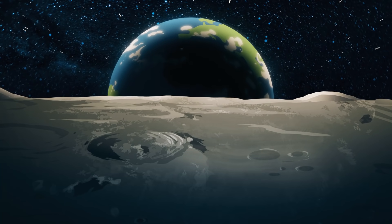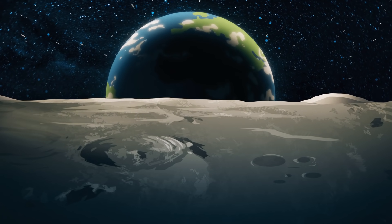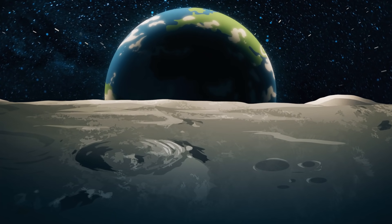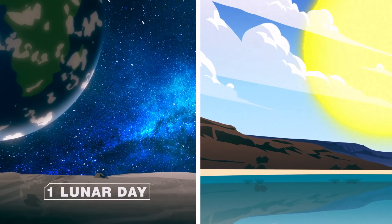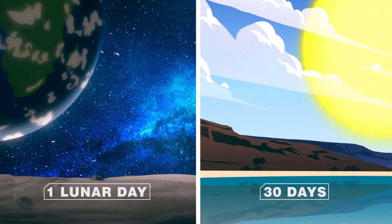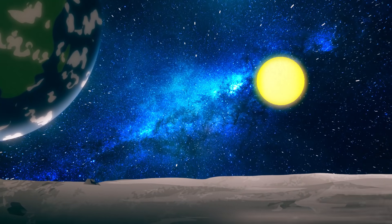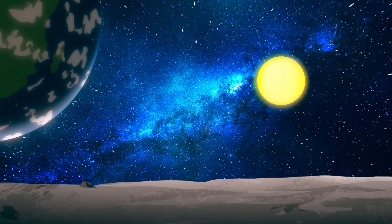For starters, the moon's rotation could hypothetically be sped up to match the Earth's 24-hour cycle. Currently, one lunar day spans almost 30 days on Earth. The moon is tidally locked to the Earth, so the moon rotates incredibly slowly.